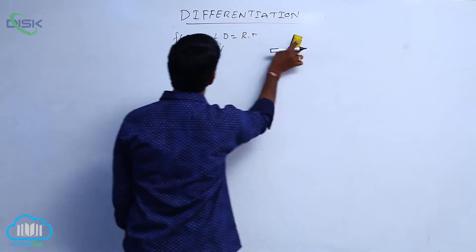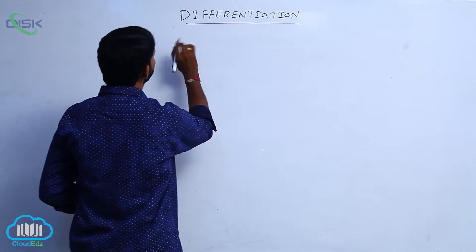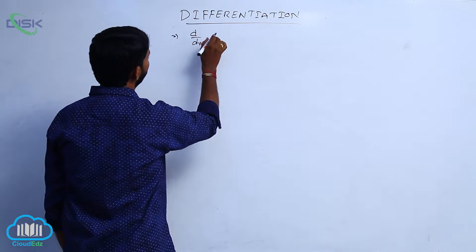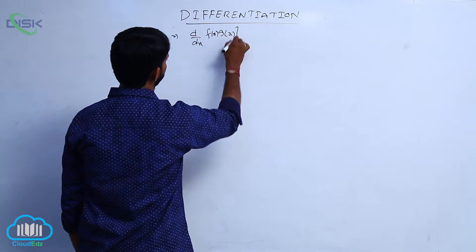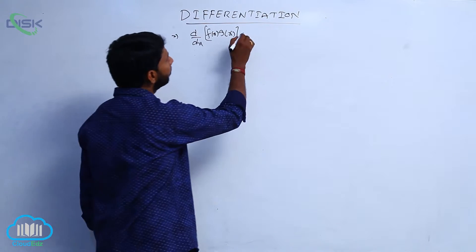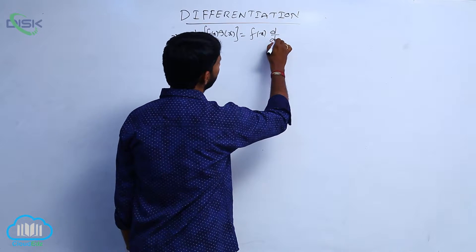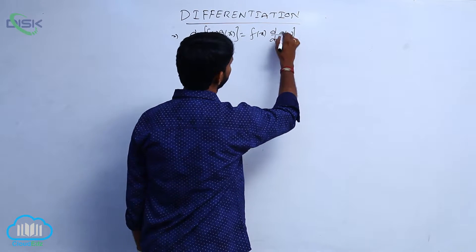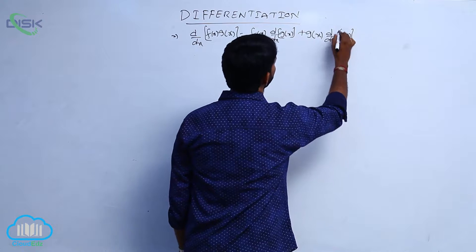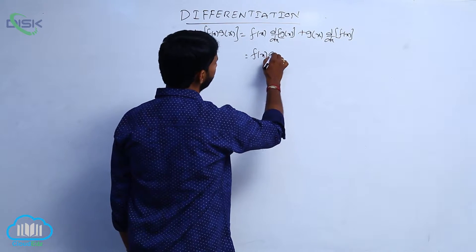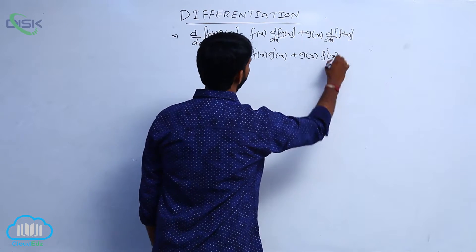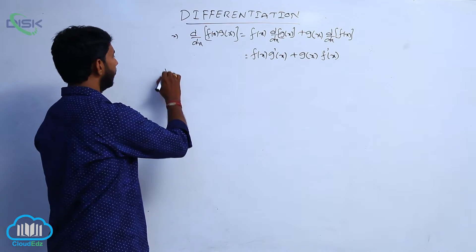Next, d by d x of f of x into g of x equals f of x into d by d x of g of x, plus g of x into d by d x of f of x. And the following is a proof.